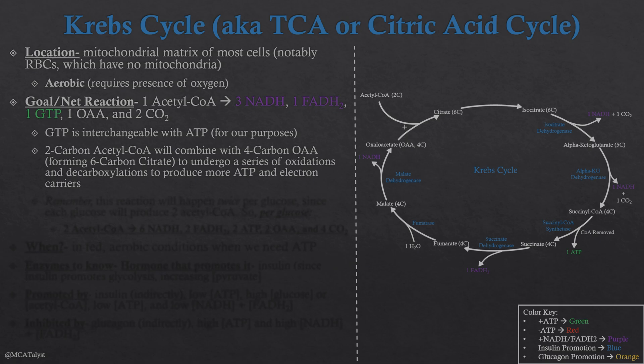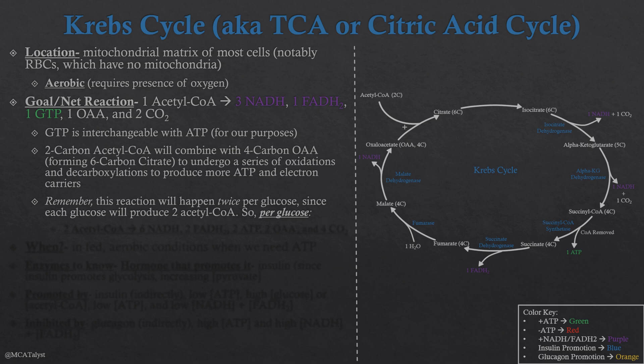To explain with words what's going on: we're taking this two-carbon acetyl-CoA and combining it with a four-carbon oxaloacetate — the thing at the end of the cycle — to form a six-carbon molecule called citrate. This is basically where the start of the Krebs cycle is. Citrate is going to undergo a series of oxidations and decarboxylations, allowing us to produce more ATP and electron carriers, basically sucking as much energy out of this carbon chain as we can.